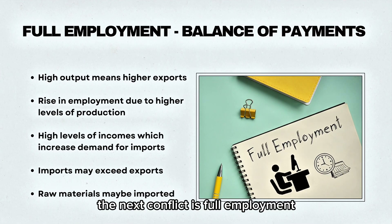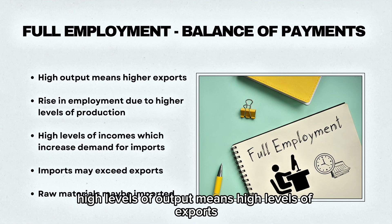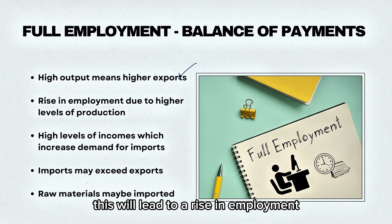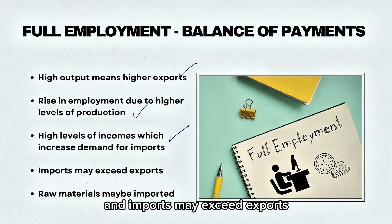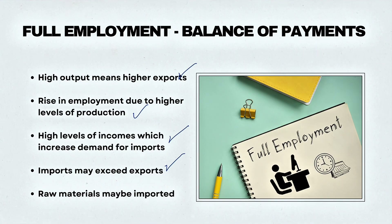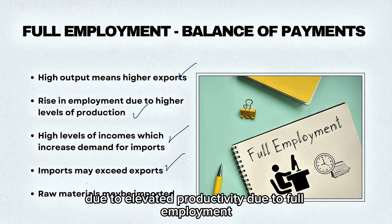The next conflict is full employment and the balance of payments. High levels of output means high levels of exports, and due to higher levels of production this will lead to a rise in employment. This also leads to an increased demand for imports, and imports may exceed exports, which results in an imbalance of payments. Additionally, raw materials may be imported due to elevated productivity from full employment.